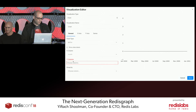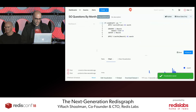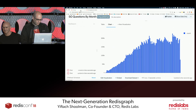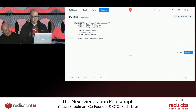Using a nice visualization tool called Redash, we can create a bar chart — x column is month, y column is count — and immediately you can see the graph of all Stack Overflow questions by month, done in real time.